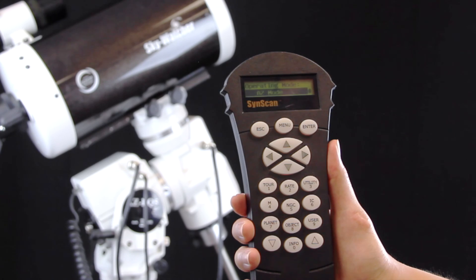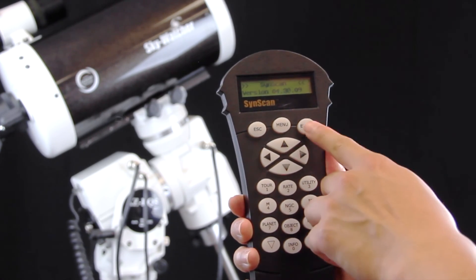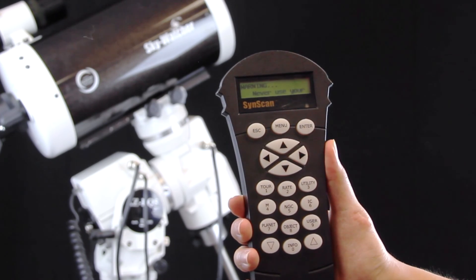On your handset, choose AZ mode and set up time, longitude, latitude, etc. Make sure they are as accurate as possible.